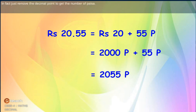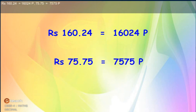In fact, just remove the decimal point to get the number of paise. Rs. 160.24 equals 16,024 paise. Rs. 75.75 equals 7,575 paise.